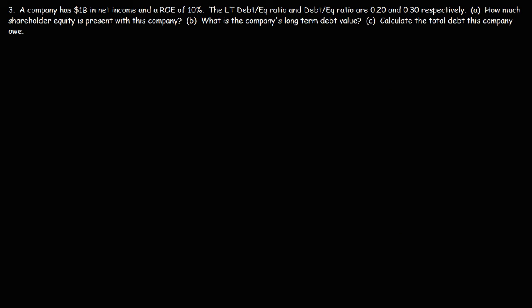Now let's move on to number three. A company has $1 billion in net income and a return on equity (ROE) of 10%. The long-term debt-to-equity ratio and the total debt-to-equity ratio are 0.20 and 0.30, respectively. Part A: how much shareholder equity is present in this company?